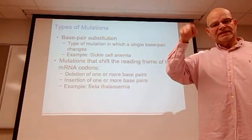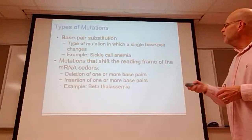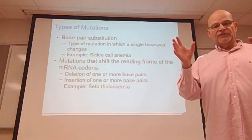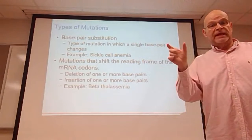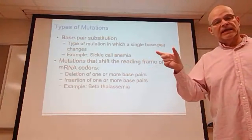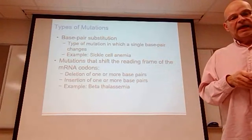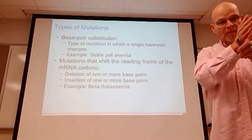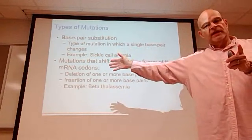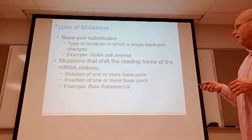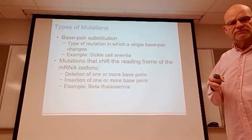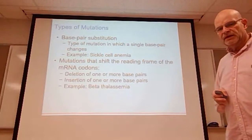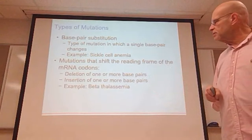Mutations that shift the reading frame of the messenger RNA are called frameshift mutations. In a base pair substitution everything is still the same length — just one grouping has changed. In a frameshift, bases have been added or deleted, making the strand longer or shorter. From the point of the mistake all the way to the end of the gene, every three-base combination will be different. Frameshift mutations occur by deletion or insertion — examples include beta thalassemia.